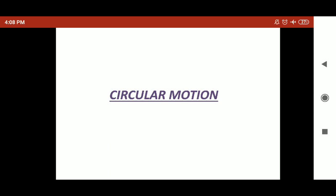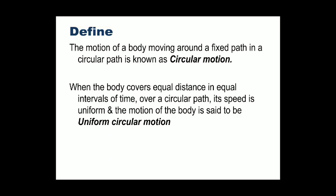In our daily life, in our home, what we observe: the motor, the blades of a fan, the blades of a mixer grinder, even the motor in the mixer grinder or in the washing machine - all move in circular motion. So, the object when it moves around a fixed path in a circular path is known as circular motion.